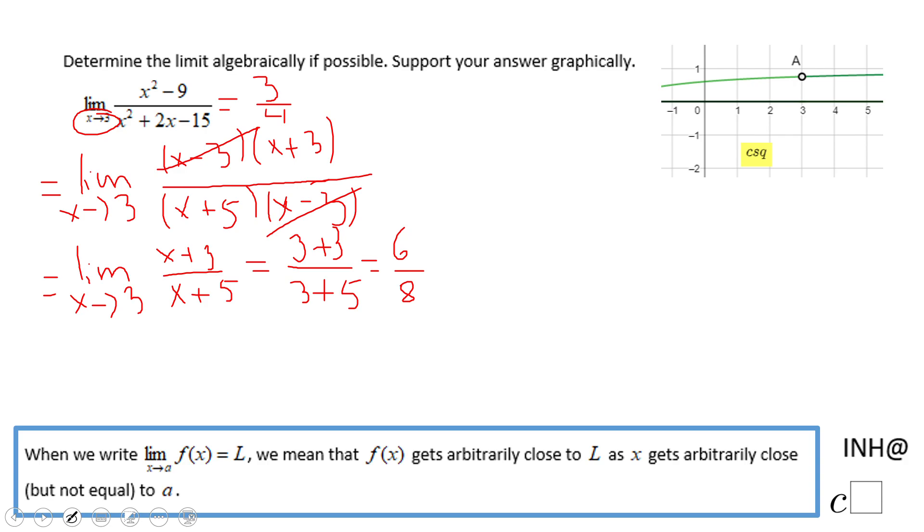And you notice this is a piece of this rational function, just the piece that goes in this window. And you notice here when x is getting closer and closer to 3, the point A, it looks like the value of the function is between 0 and 1, at 0.75.